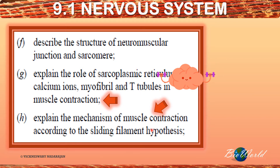There's going to be two parts to my discussion today. Firstly, I shall explain the individual roles of the sarcoplasmic reticulum, which is a modified endoplasmic reticulum in the muscle, the calcium ions that are found in the sarcoplasmic reticulum, the myofibrils actin and myosin, as well as the T-tubules that are formed from the sarcolemma. Once I have explained all this, I will move on to combine their function during muscle contraction based on the sliding filament hypothesis.